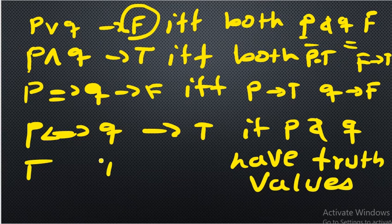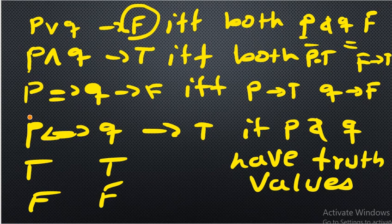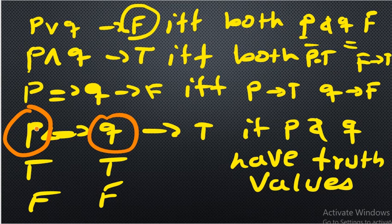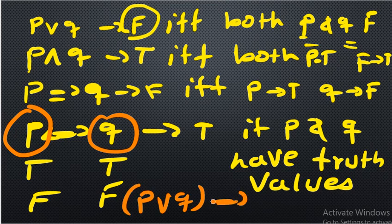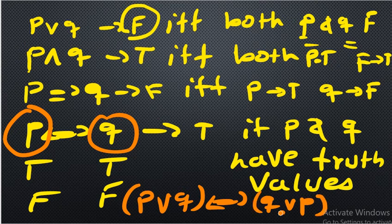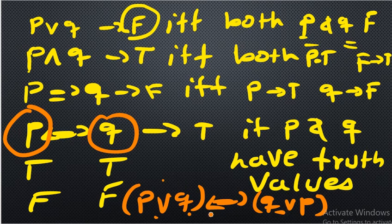That means either both true or both false — they have to be the same. If you have two compound propositions on the left side and right side of a biconditional, and they are the same — for example p or q on the left and q or p on the right — then you can conclude it's a tautology, because same values mean true-true or false-false, so the biconditional is always true.